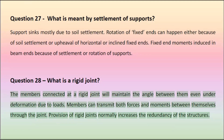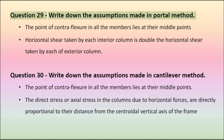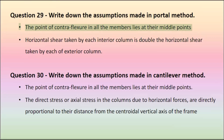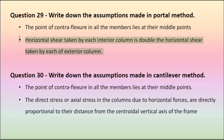Question 28: What is a rigid joint? The members connected at a rigid joint will maintain the angle between them even under deformation due to loads. Members can transmit both forces and moments between themselves through the joint. Provision of rigid joints normally increases the redundancy of the structures. Question 29: Write down the assumptions made in portal method. The point of contraflexure in all the members lies at their middle points.